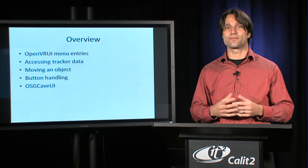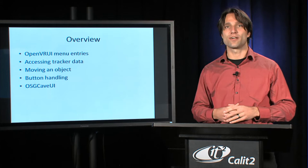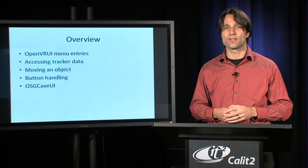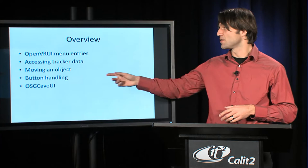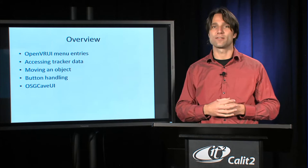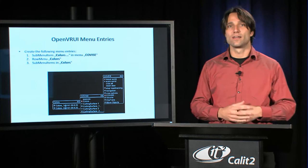As an overview of today's lecture, we're going to talk about the various options for a programmer in OpenCover to create user interaction. One of them is the OpenVRUI menu entries. The next one is the tracker data and how you can access it. The third topic is how you move an object. The fourth one is how you can get the information off the input device buttons. The last item is the OSGCaveUI, which is another library similar to OpenVRUI that you can also use in your program.